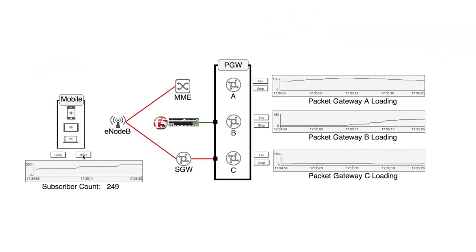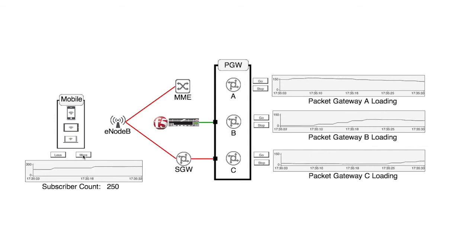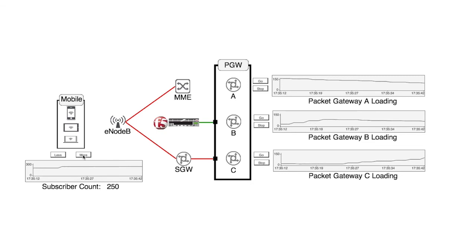First, subscribers will be added to the EPC network. As clients are added, the loading on each gateway will be equally spread. The BigIP monitors each gateway and establishes in real time the amount of traffic that the mobile subscribers are placing on each gateway node.